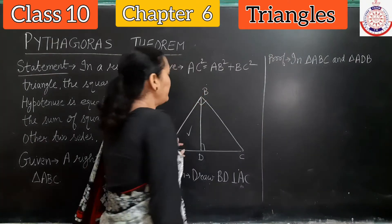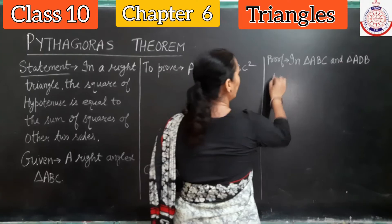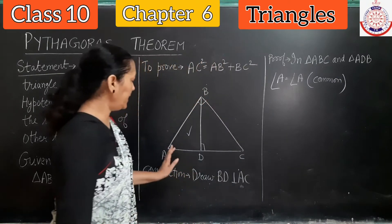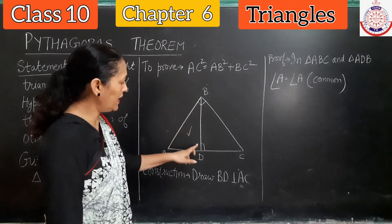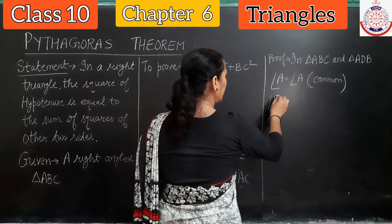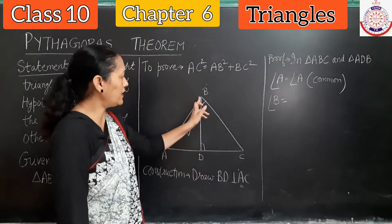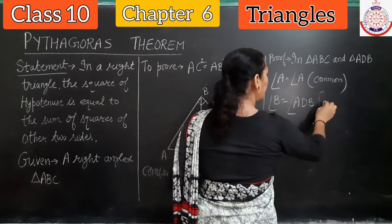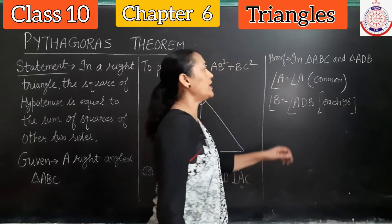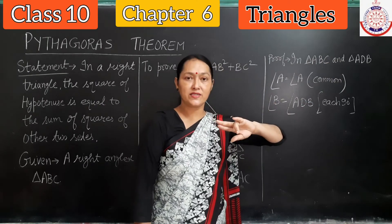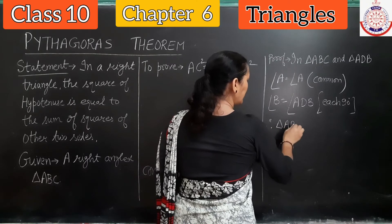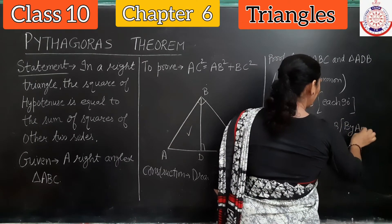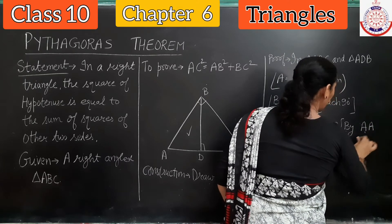In these two triangles, angle A is common in both. So we write angle A = angle A, common. Then in the bigger triangle, angle B is 90 degrees, and in the smaller triangle, angle ADB is also 90 degrees. So angle B = angle ADB = 90°. That means in triangle ABC and ADB, two angles are the same. Therefore triangle ABC is similar to triangle ADB by AA similarity rule.